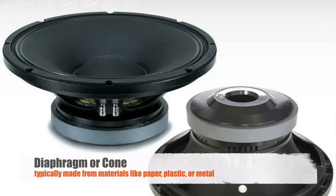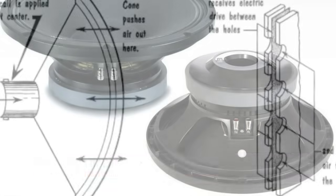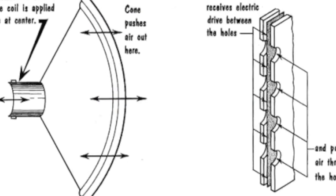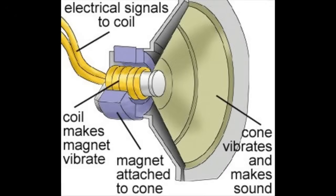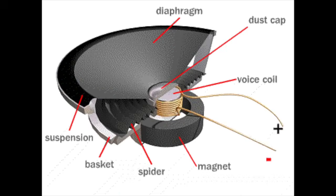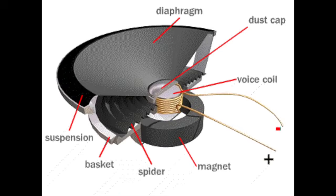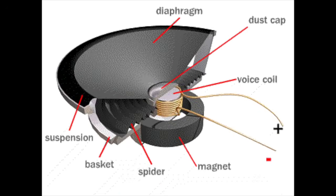The diaphragm, often referred to as the cone, is typically made from materials like paper, plastic, or metal. This component is responsible for moving back and forth to push air and create sound waves. Attached to the diaphragm is the voice coil, which is a coil of wire. The voice coil is placed within the magnetic field of a permanent magnet. When an electrical audio signal passes through the voice coil, it creates a varying magnetic field around the coil, resulting in a force that moves the coil and the attached diaphragm back and forth, creating pressure waves we perceive as sound.